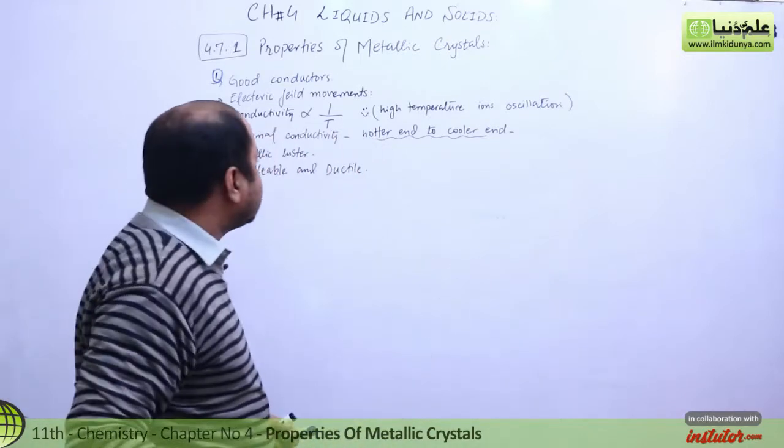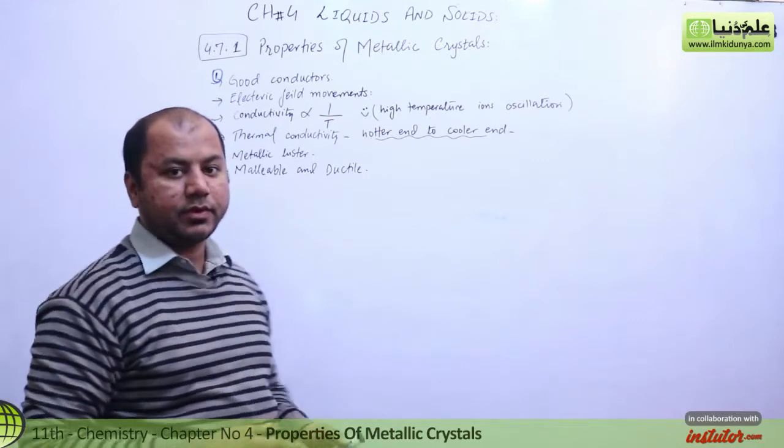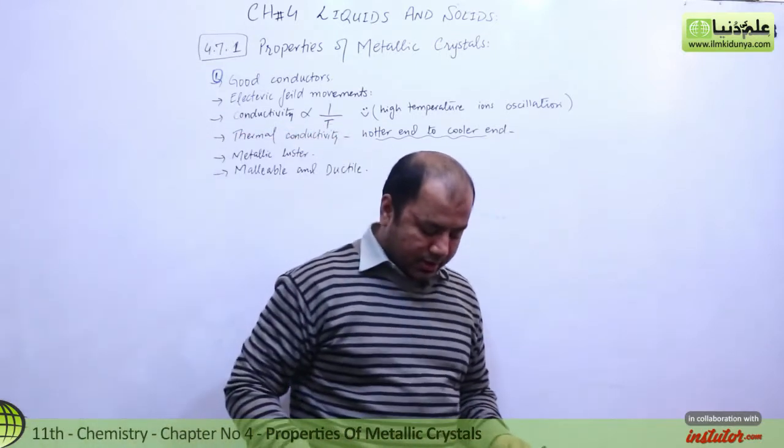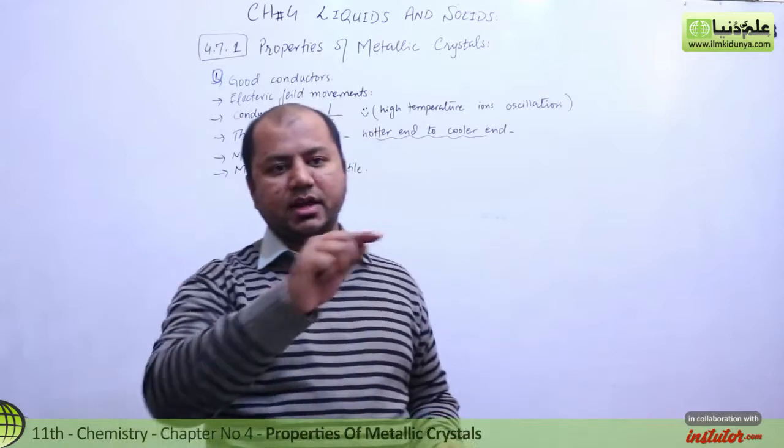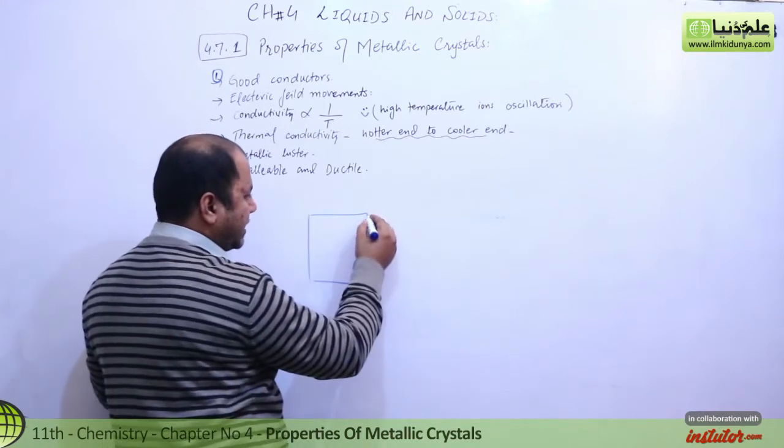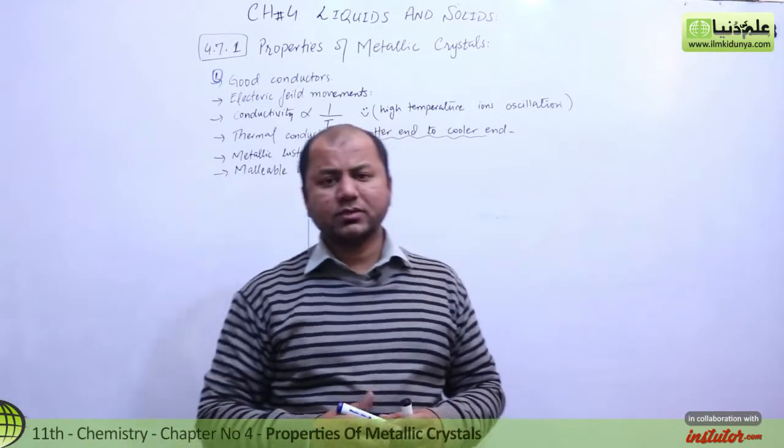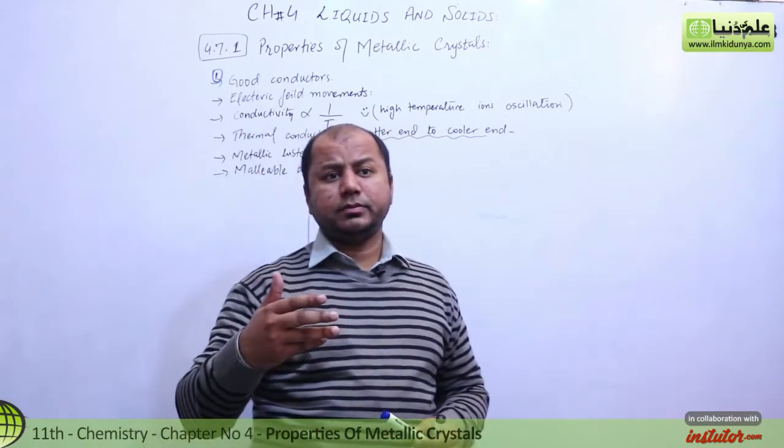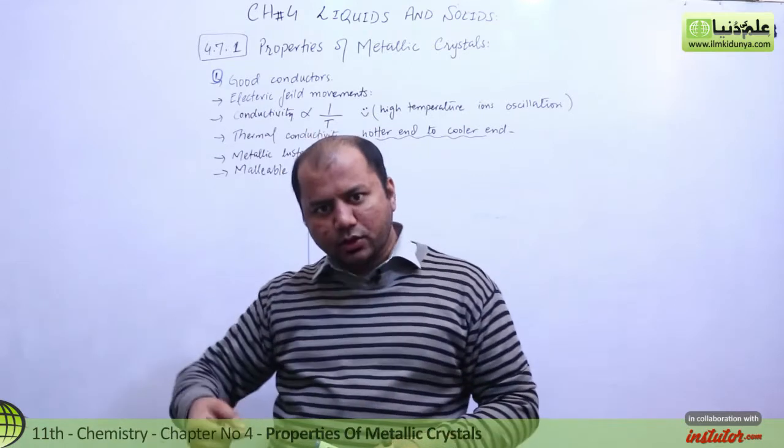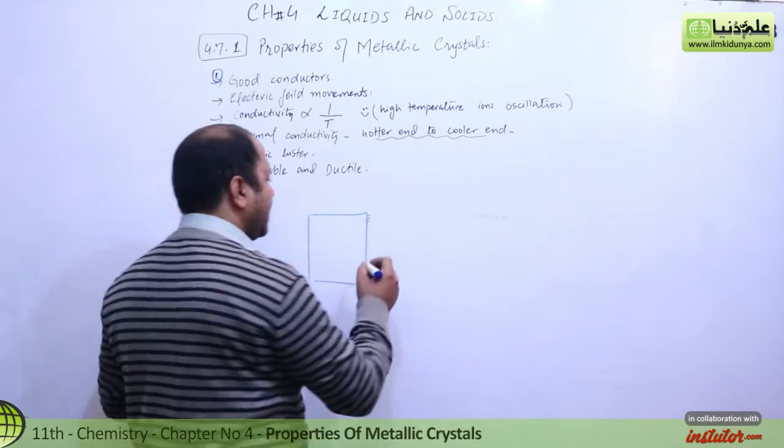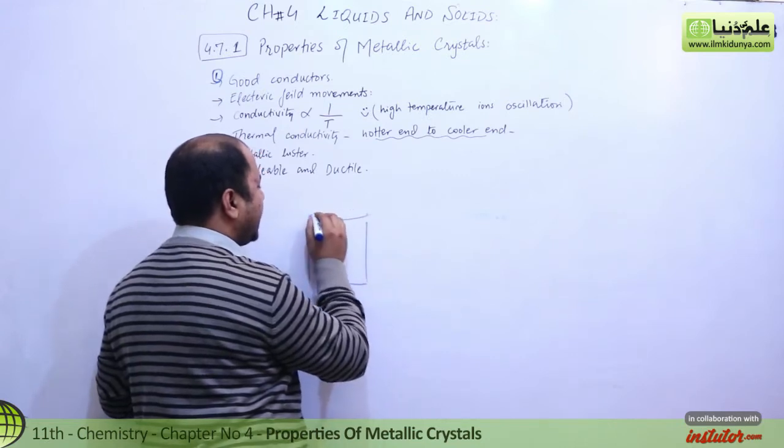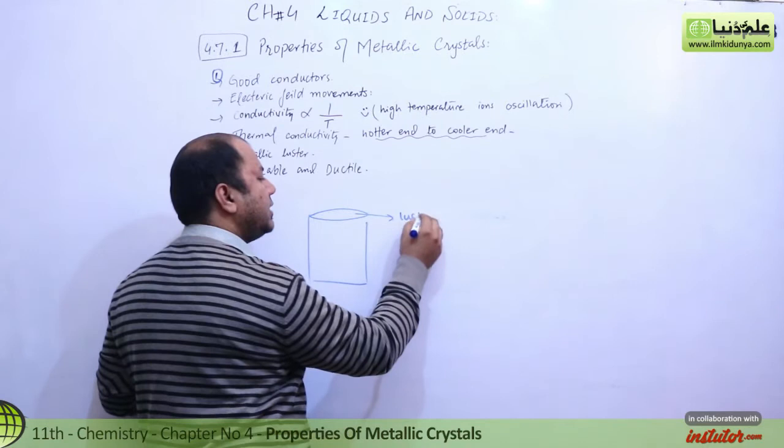Next we can talk about metallic luster. This is a very interesting question—what is metallic luster and how do metallic sheets shine? If you have a metallic sheet, this is a sharp place where lustre is created.